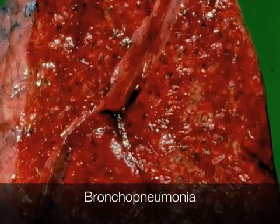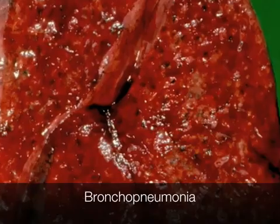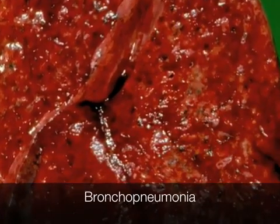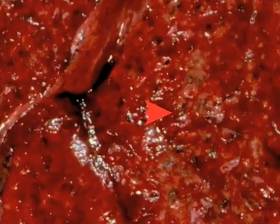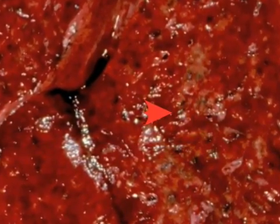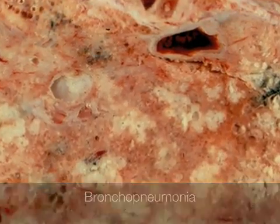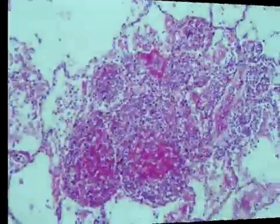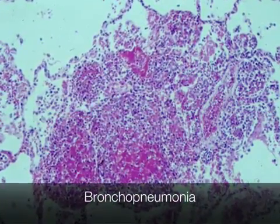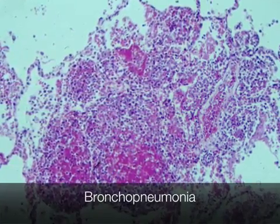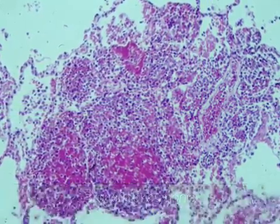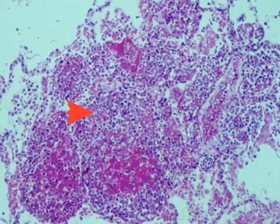This is the lung from a patient who died from bronchopneumonia. The pale foci visible towards the right of the photograph are foci of consolidation indicative of bronchopneumonia. This closer view shows the white foci of consolidation typical of bronchopneumonia. Under the microscope, the inflammation is limited to the alveoli around the terminal bronchiole.